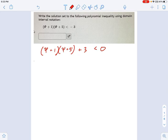That wasn't a whole lot of work, but you'll notice this is no longer factored form on the left, so now we just need to change it so it is factored form. Break open those parentheses, let's see what we got. Psi squared plus six psi plus five plus three is less than zero.